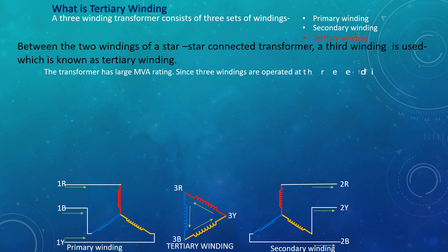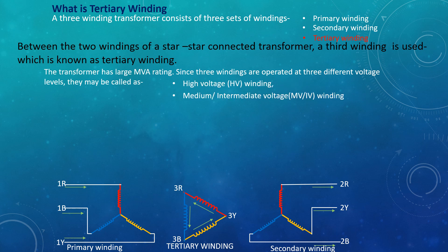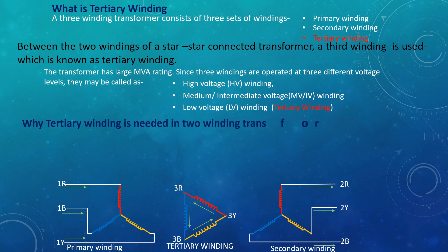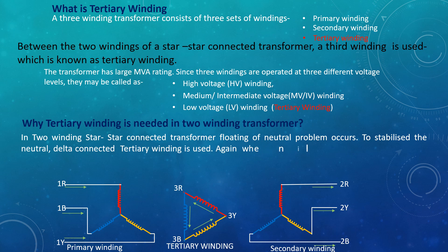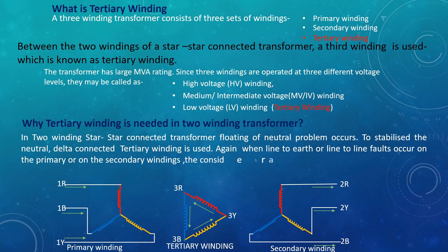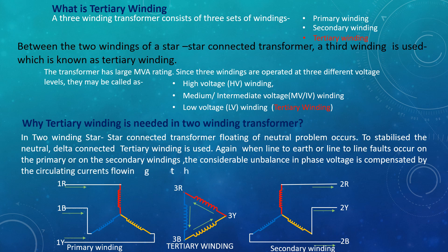The transformer has a large MVA rating. Since three windings are operated at three different voltage levels, they may be called high voltage winding, medium or intermediate voltage winding, and low voltage winding. Why is tertiary winding needed in a two-winding transformer? In a two-winding star-star connected transformer, the floating of neutral problem occurs. To stabilize the neutral, a delta-connected tertiary winding is used. When line-to-earth or line-to-line faults occur on the primary or secondary windings, the considerable unbalance in phase voltage is compensated by the circulating currents flowing through the closed delta.